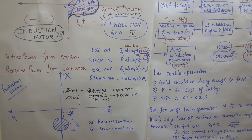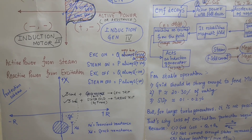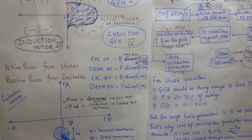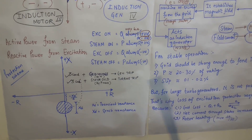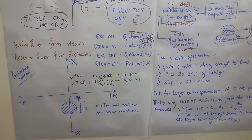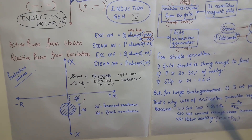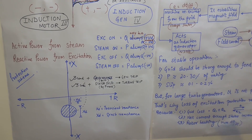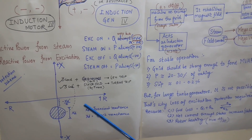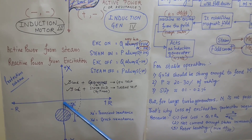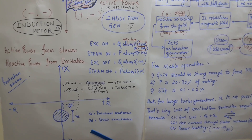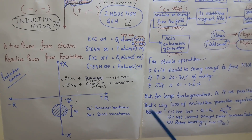For loss of excitation protection there are certain conditions which are compulsory. Condition 1: the operating point has to enter into the locus for a certain time period. Condition 2: the rotor winding should experience under voltage. Condition 3: the reverse reactive power — meaning the reactive power drawn by the generator — has to be more than a certain limit.